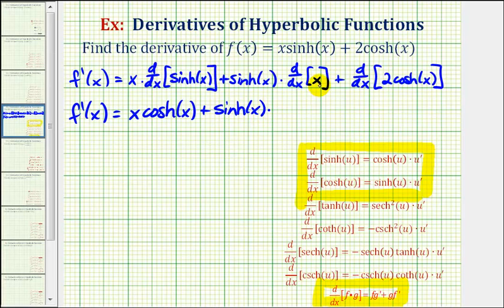Times the derivative of x, which is just one, plus the derivative of two times hyperbolic cosine x — which again does not require the chain rule — so our derivative would just be two times hyperbolic sine x.